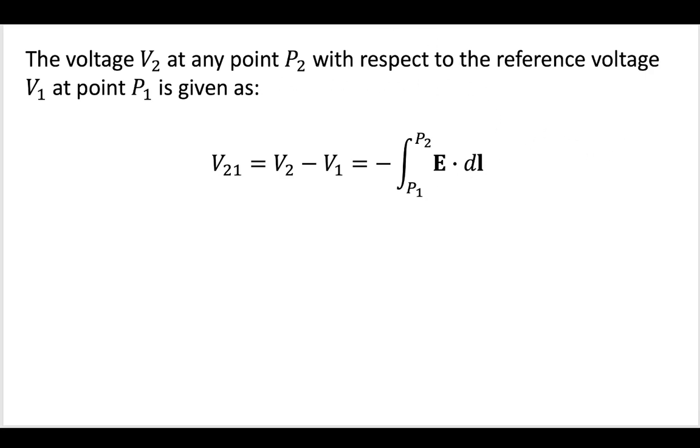So in this case, we know that our voltage V1 is equal to 0 volts, and that's at point P1 is equal to 0, and we also were told that point P2 is going to be equal to some R.